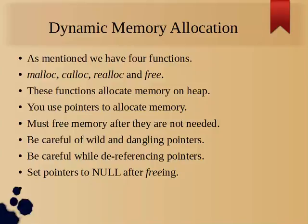In my pointer session, I have told that there are four functions: malloc, calloc, realloc, and free. Malloc and calloc are used for allocating memory on the heap. They have one difference: malloc does not alter the contents of memory which it will allocate to you, but calloc will allocate as well as clear the contents — set them to zero. Both of them return a generic void pointer to the area of memory allocated, which you can cast to any pointer type you want.